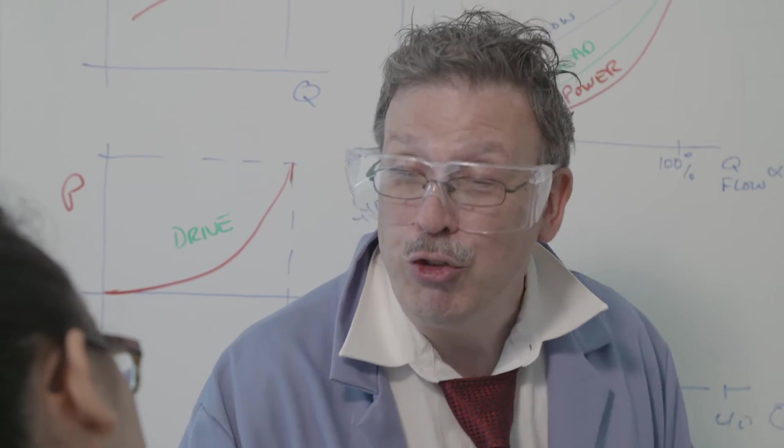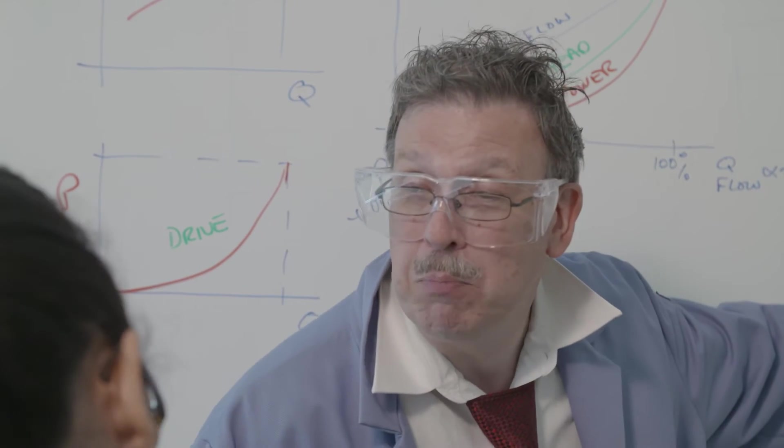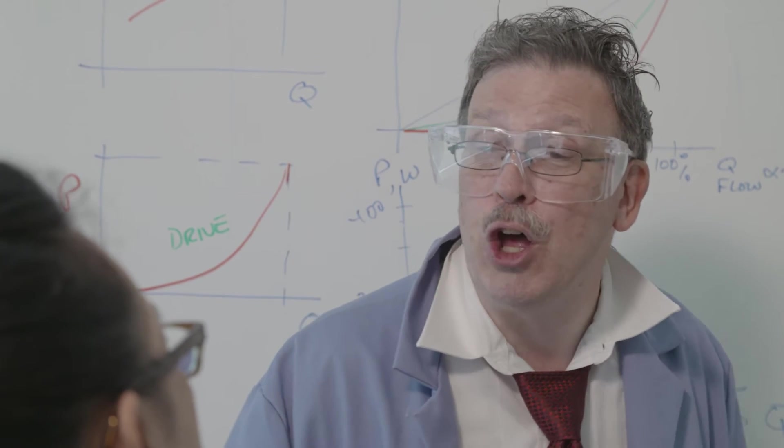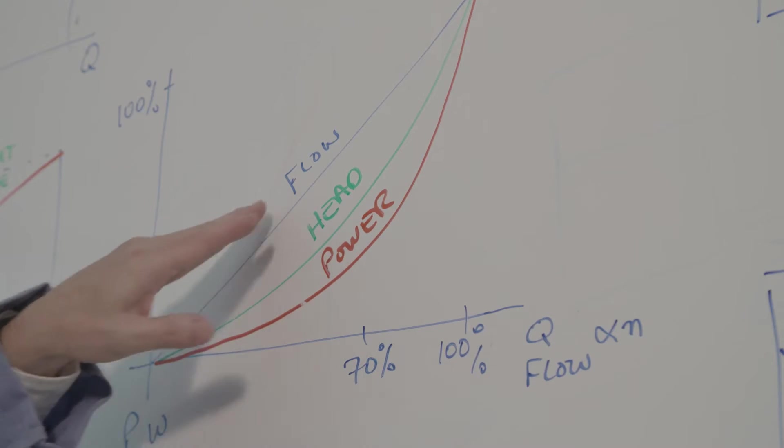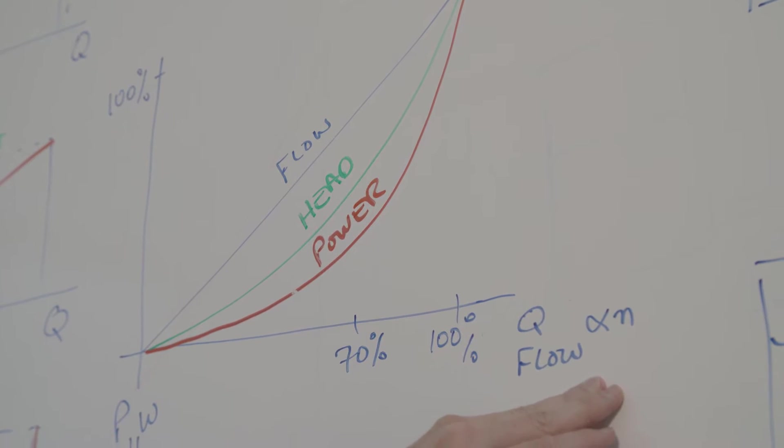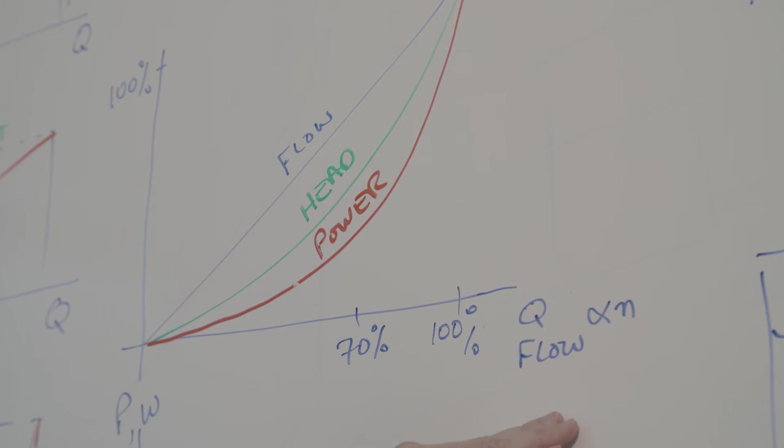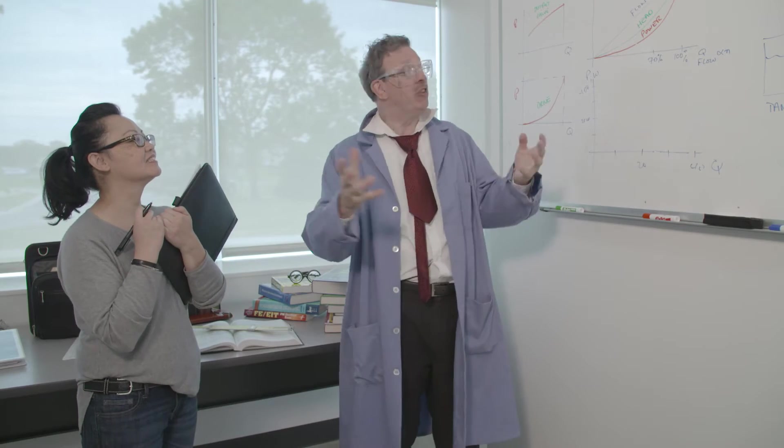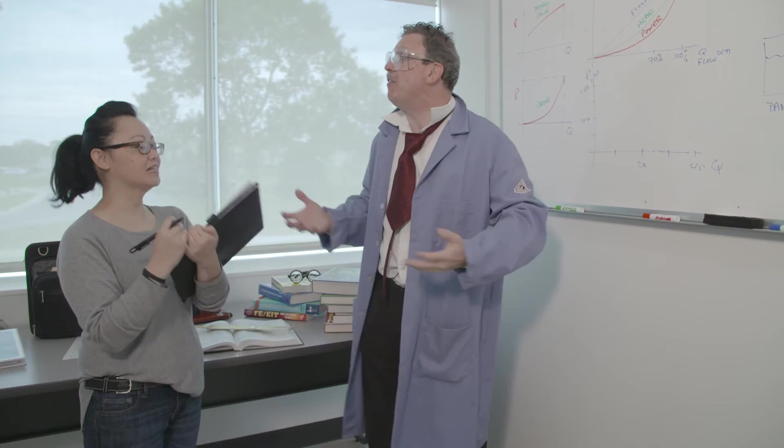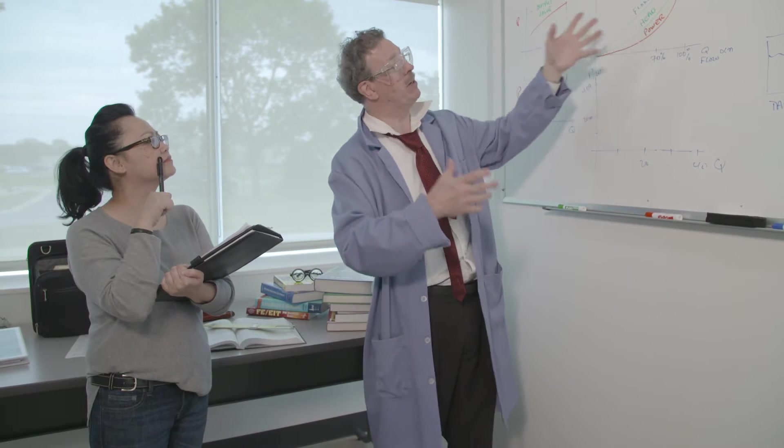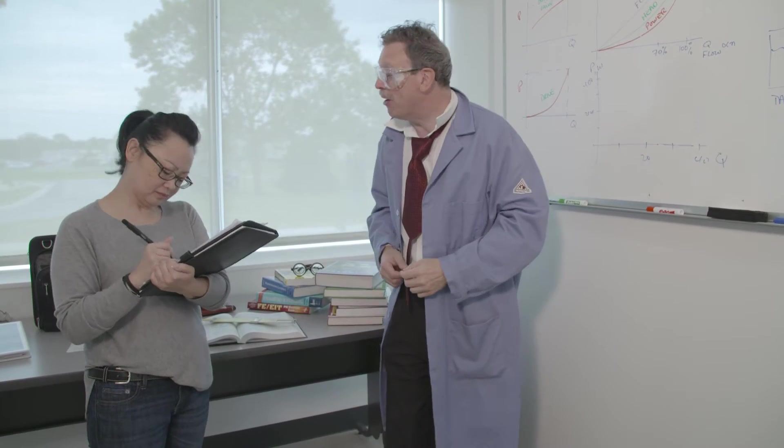Well what we can also do is we can slow down this pump. And by slowing down this pump that's where the affinity laws come in. Because the flow is proportional to the speed of that pump. And the head pressure is proportional speed squared. And the power which is the important part is proportional speed cubed. Does that mean we could save energy? It sure does. For example suppose we're running at about an average of 70 percent of flow. With 70 percent of flow we would save about 60 percent of the energy that way.